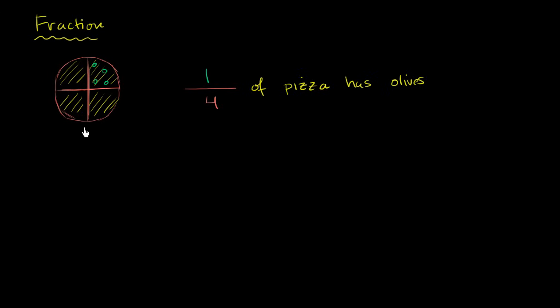Now, someone said, well, what fraction of this pizza only has cheese? Well, this fraction has cheese, but it also has olives. So we won't count that. But then we have one, two, three. Three fractions, three of these equal pieces have only cheese. So we could say three out of a total of four pieces, so three-fourths of the pizza has only cheese.